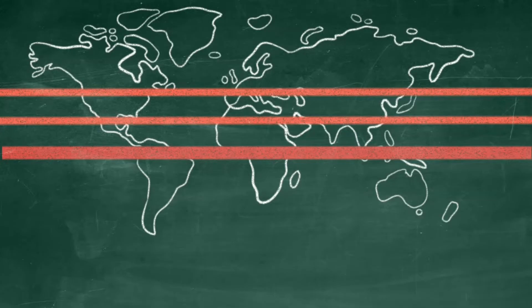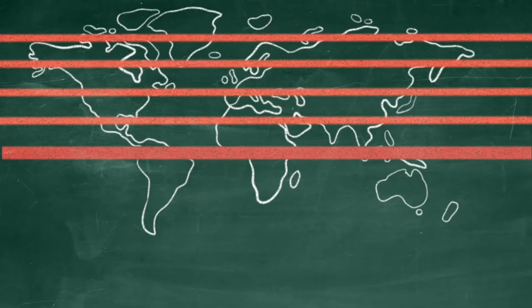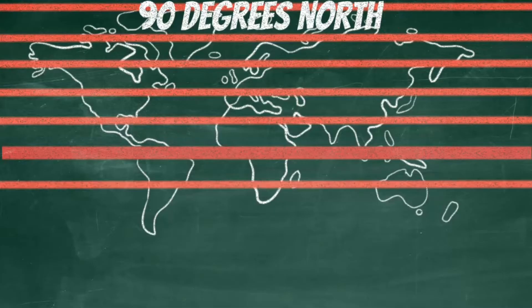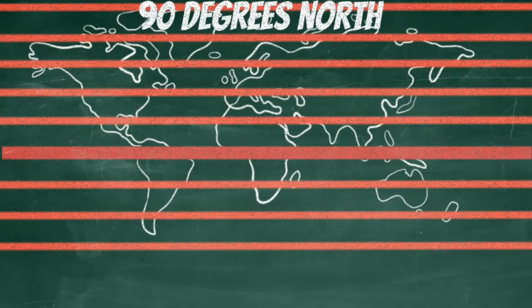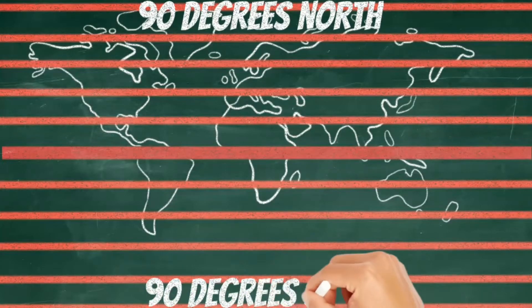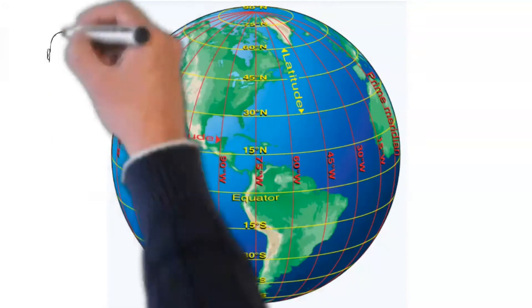From the equator these lines run north until they reach the top of the earth at 90 degrees north. These lines also run south until they hit the bottom of the globe at 90 degrees south. One important thing for you to remember is that lines of latitude are parallel with the equator.